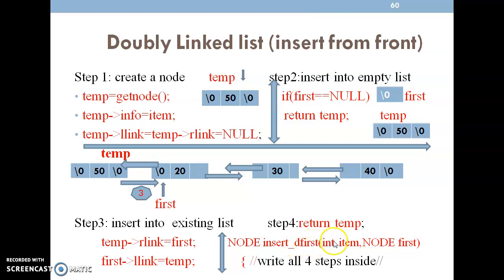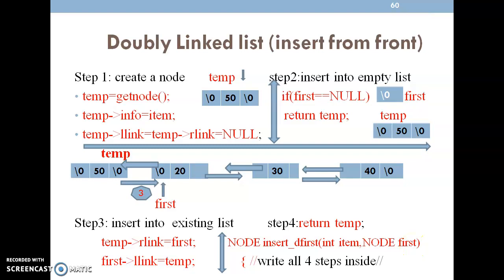Then the first node is now temp, so return temp. The function signature is: node insert_doubly_front(int item, node first). Note that in a doubly linked list we always use node first, unlike in a circular linked list where we use node last. From the first node we can access all other nodes. Write all these steps inside this function.